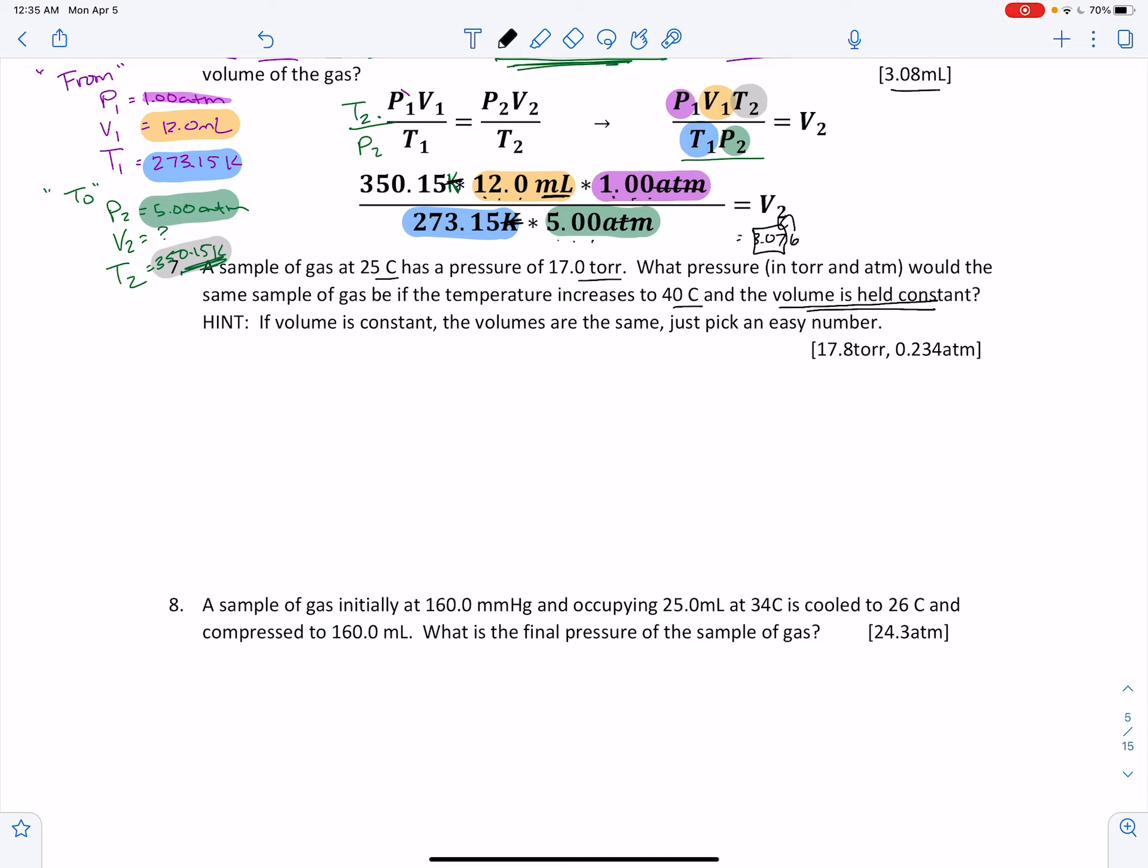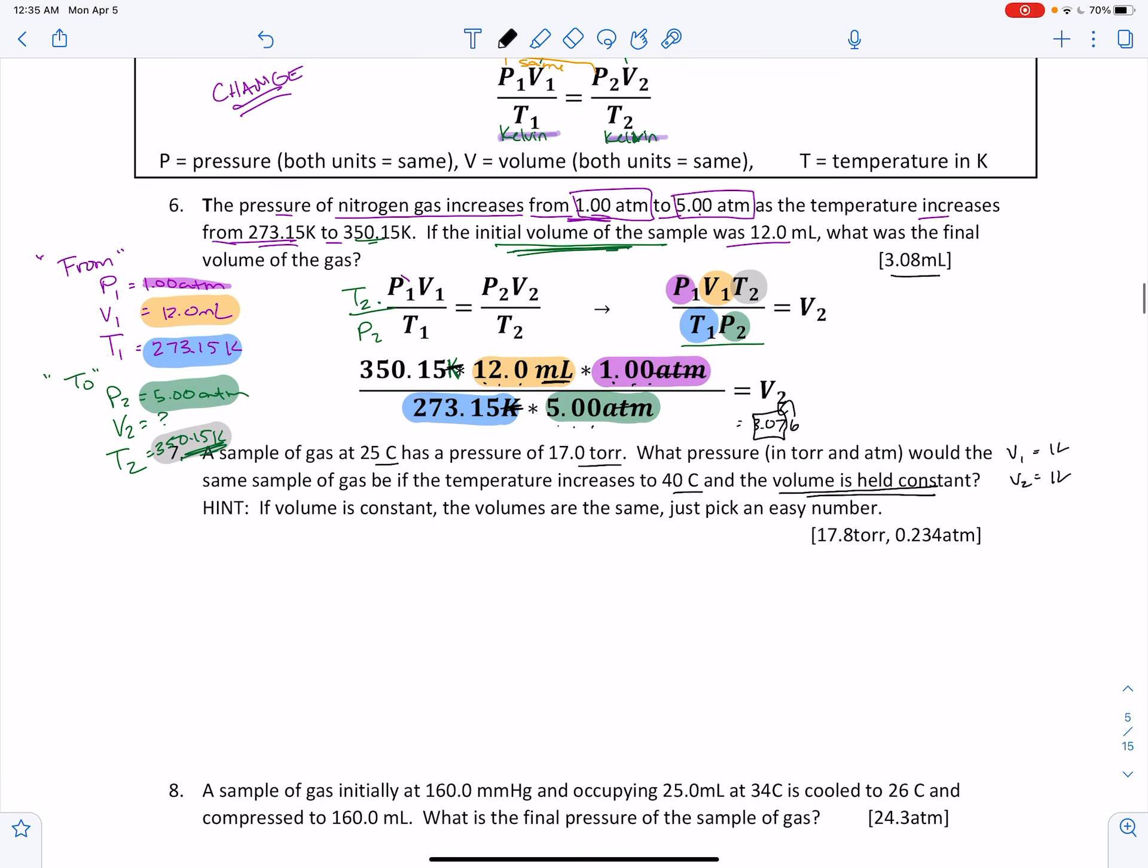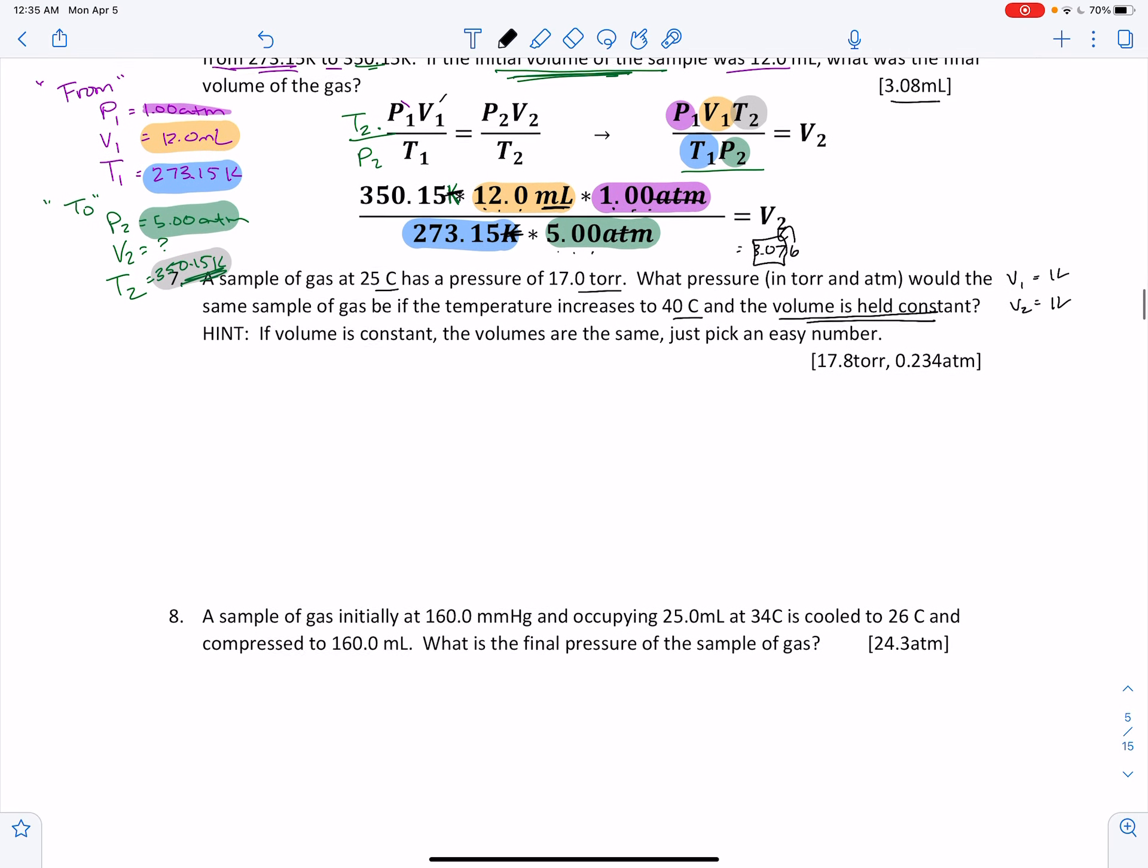So if it's constant, what that means is the volume at the beginning, and we could pick a number. Let's say that it's 1 liter. It's held constant, so it means that the volume at the end is also a liter. Look at how this equation works. If this is 1 liter and that's 1 liter, they cancel each other out. So any time that something is held constant, that variable is basically thrown out. Volume 1 will end up being divided by volume 2. They both are the same thing, so they cancel.